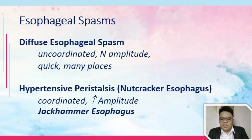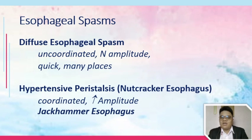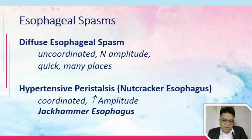As a quick recap for esophageal spasm, there are two main types: diffuse esophageal spasm and hypertensive peristalsis. Under hypertensive peristalsis, if the contractions are continuous, that is referred to as jackhammer esophagus.